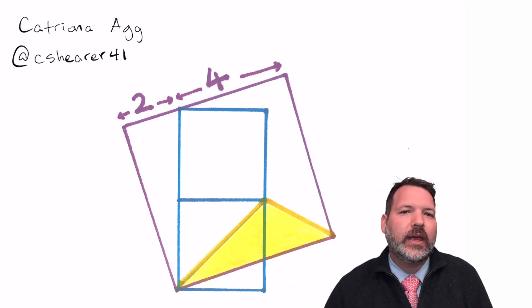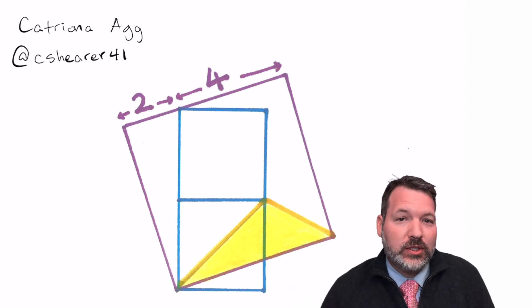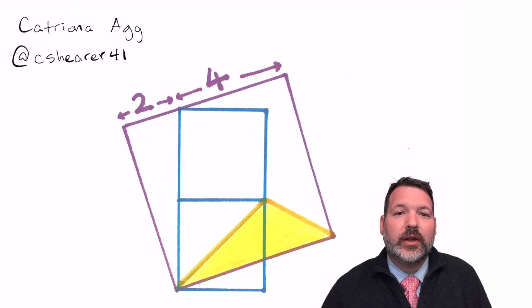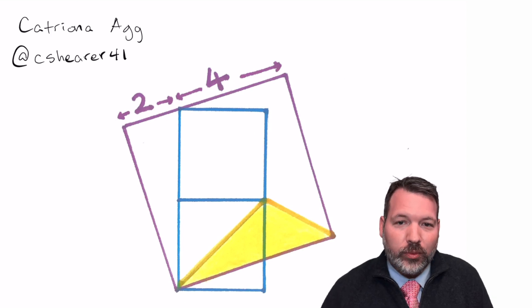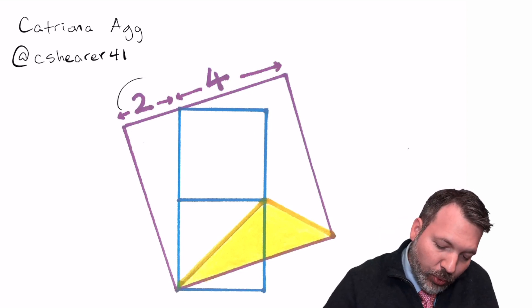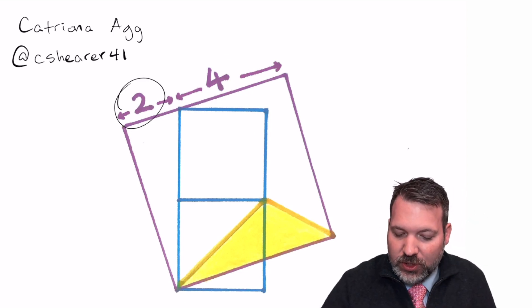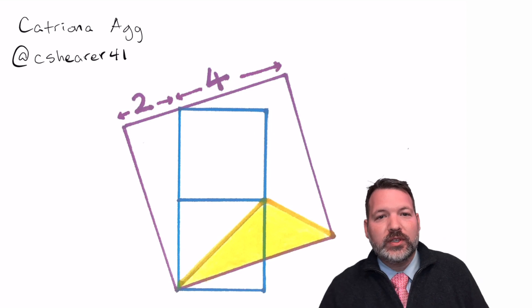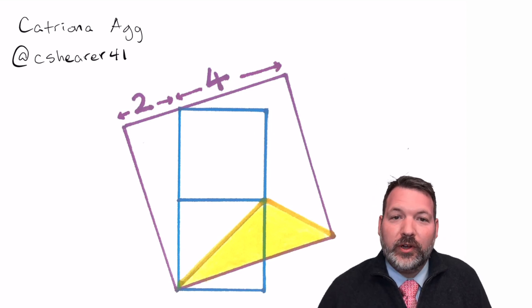First of all, everything you're looking at that looks like a square is a square, and our job is to figure out the area of that yellow shaded region, that triangle at the bottom of the larger square. We're given some important information here. We have lengths of 2 and 4 across the top of the square, but that's it. And from that, we're supposed to figure out the area of that shaded region.